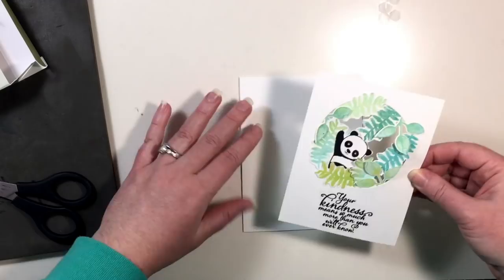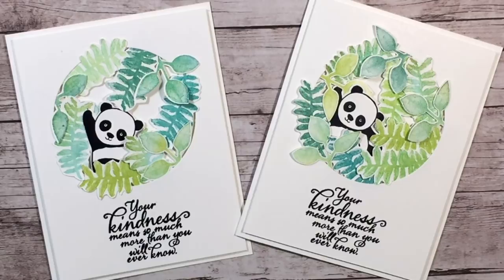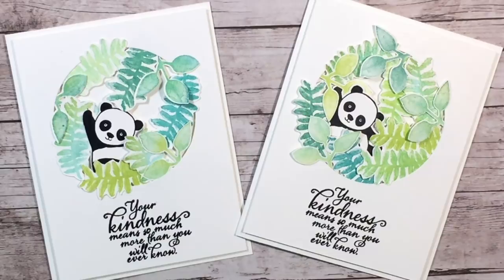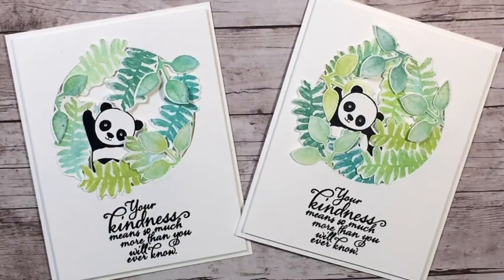And there we are creators there is our super cute panda card using the Painted Harvest bundle as well as the Party Panda stamp set. Now the Painted Harvest bundle consists of the stamp set and the punch although it is not listed as a bundle anymore and you do need to purchase those items separately.